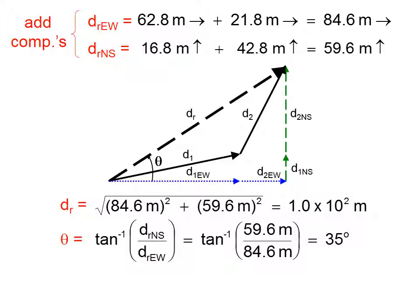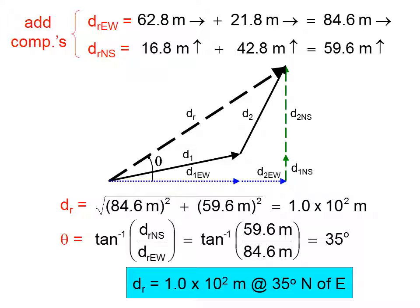And theta is the inverse tangent of opposite over adjacent. So clearly, that's going to be 59.6 divided by 84.6, the inverse tangent. Make sure your calculator is in degree mode. Boom. There you have it.